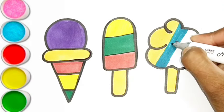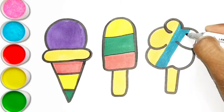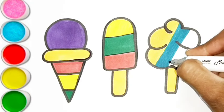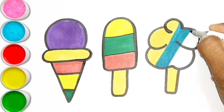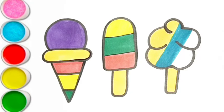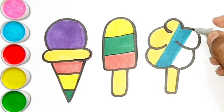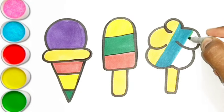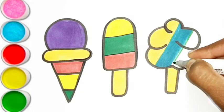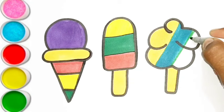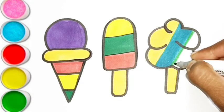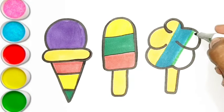L is for lion. L, l, lion. M is for mat. M, m, mat. N is for net. N, n, n, net.